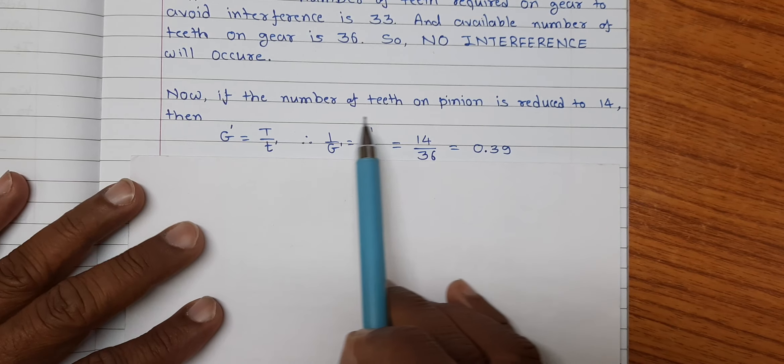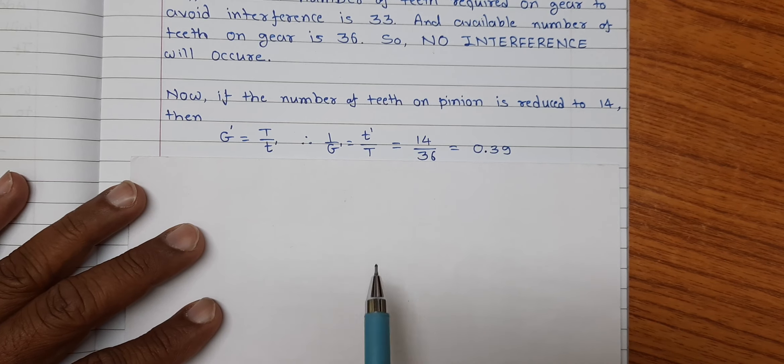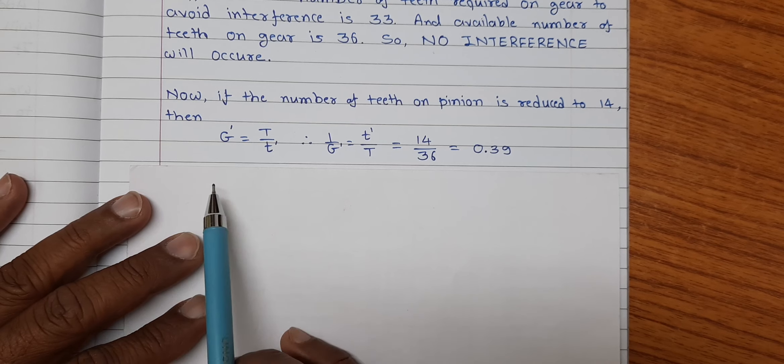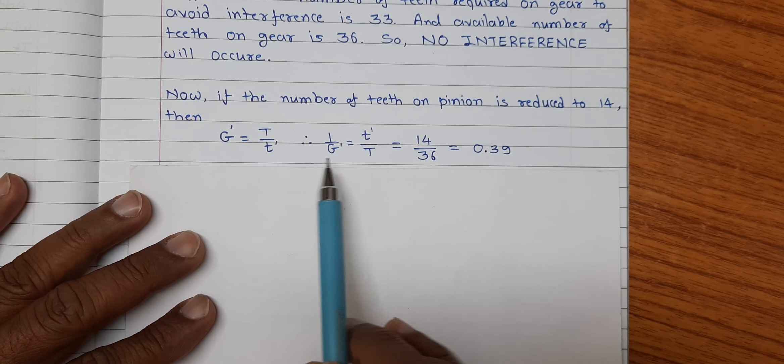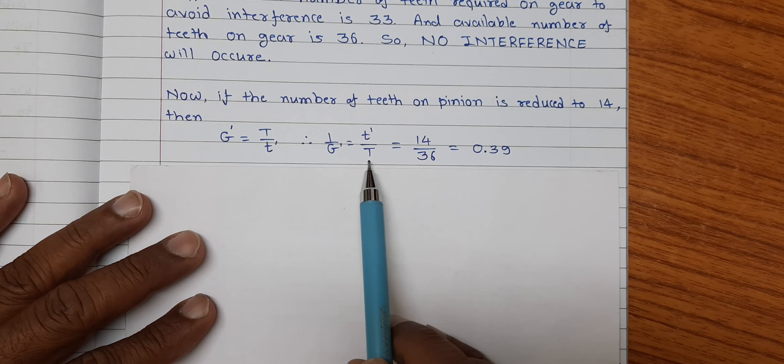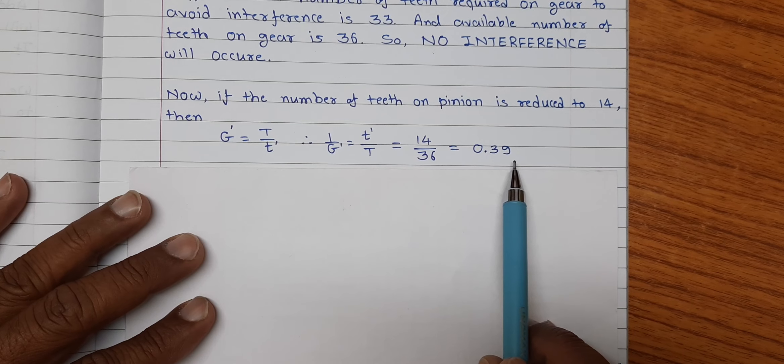Now, if the number of teeth on pinion is reduced to 14, then the new gear ratio g dash will be t upon t dash. Hence, 1 upon g dash will be on substitution of value will be 0.39.